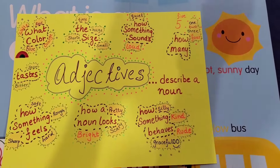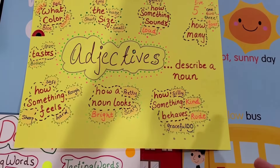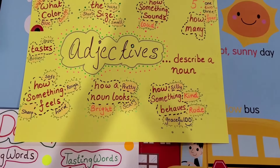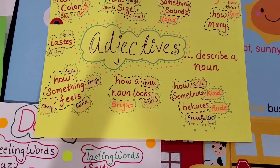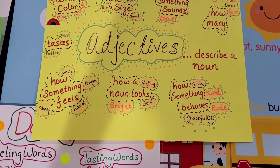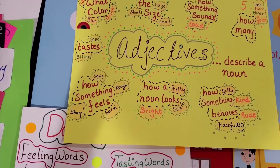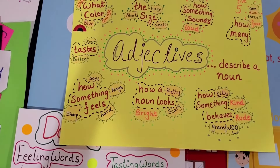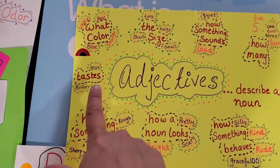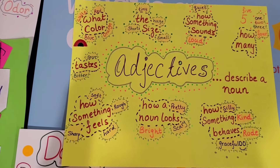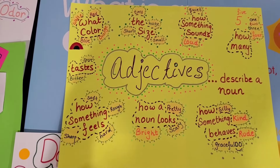How something sounds: loud and quiet. How many: five, one, two, three, four — just numbers. How something or someone behaves: silly, kind, rude, graceful. How a noun looks: bright, scary, pretty, handsome, beautiful. How something feels: soft, rough — that's texture — sharp and hard. Taste can be bitter, sour, sweet, and savory.